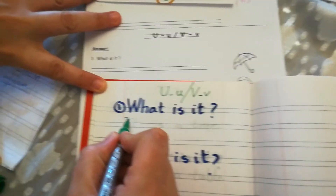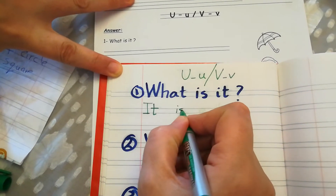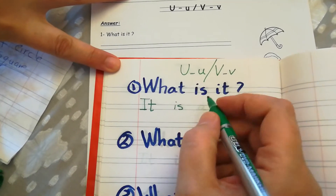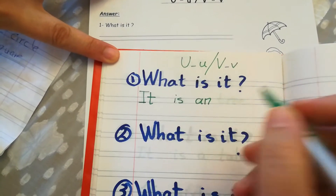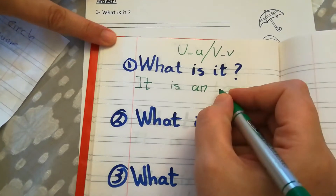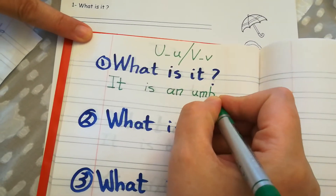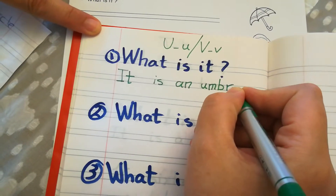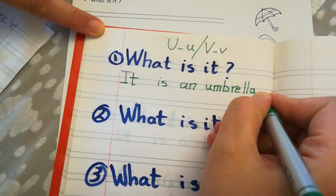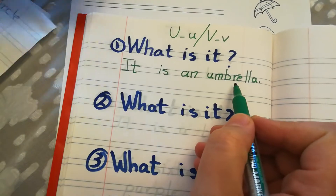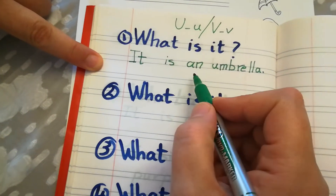Let's write: capital letter I, small letter T — 'it.' Small letter I, small letter S — 'is.' N. Small letter A, small letter N — 'an.' Umbrella: U, M, B, R, E, L, L, A. Umbrella. It is an umbrella.